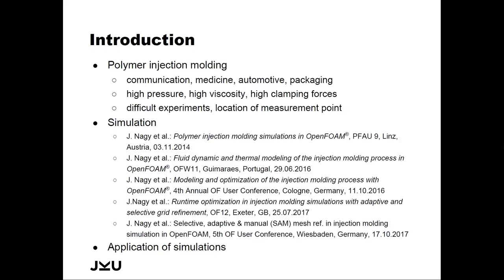Your smart TV or the bumper of your car — these plastic parts are created with polymer injection molding. It is highly used in different kinds of industries like communication, medicine, automotive, packaging, and so on. The main challenge is the material itself: the high viscosity and the non-Newtonian behavior.